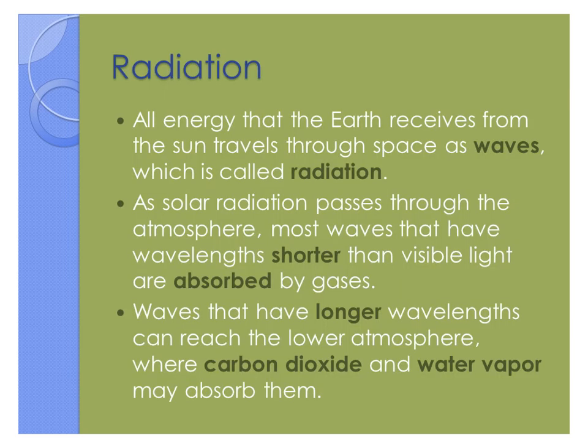Let's start with radiation, because all of the source of this heat and energy is coming from the sun. The main way we get that energy is through light waves that travel from the sun to the Earth — through empty space as waves. This is called radiation. While it passes through the atmosphere, a lot of waves that have wavelengths shorter than visible light are absorbed by gases before they can get all the way down to us.